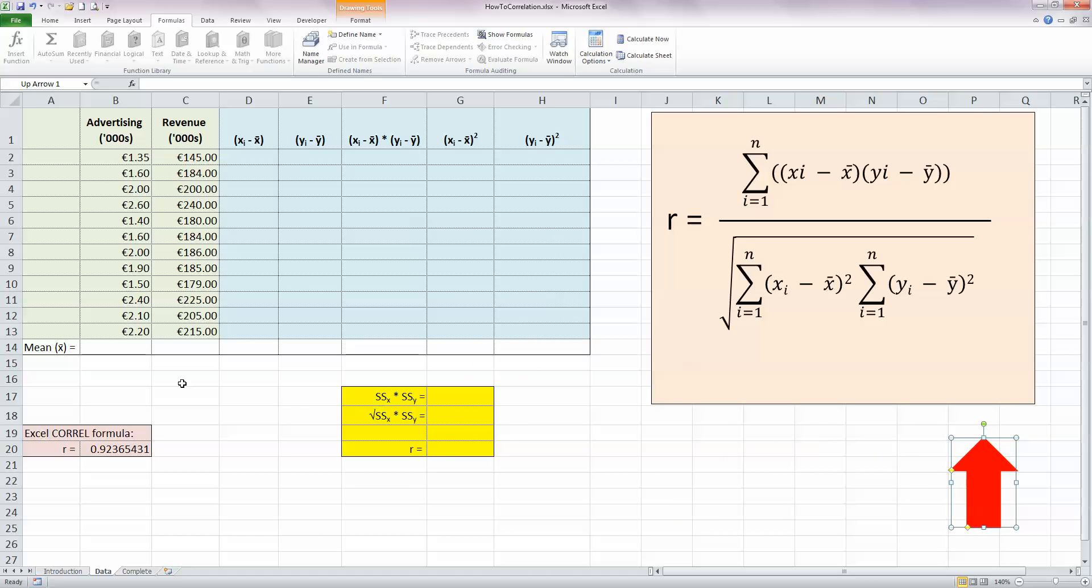So the first calculation I'm going to need is the mean of X. So I need to calculate the mean of the advertising. So in cell B14, I'm just going to put in the formula for that, which is equals average, and in brackets, all my values here for advertising, select with my mouse, closing bracket, and press enter. So my mean of X is 1.89 euro.